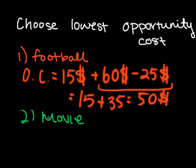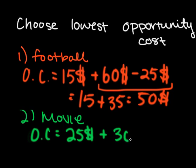So our second choice was to go watch the movie. We can calculate the opportunity cost because we know that watching the movie costs $25. And the net benefit that you lose is $30 minus $15,